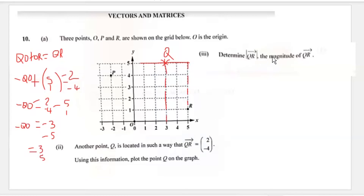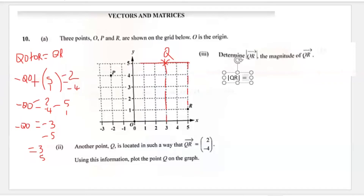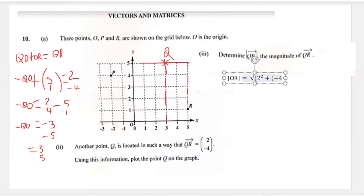Part three says determine the magnitude of QR. When looking at the magnitude of a vector, we take the square root of the sum of the squares of each individual vector component. So for the magnitude of QR, it would be the square root of two squared plus negative four squared.